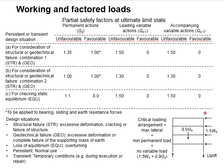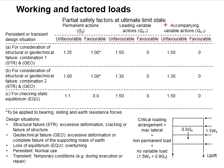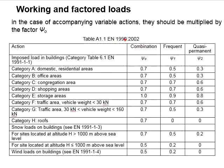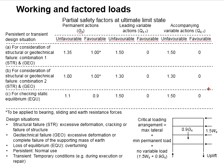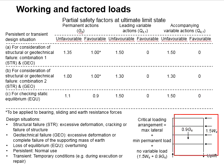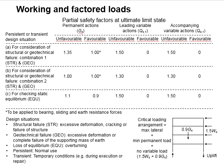Therefore, we assume the wind load as the leading variable and QK as the accompanying variable. The accompanying variable actions must be multiplied with the reduction factor, and since the accompanying variable actions in the favorable situation are multiplied by a factor of 0, the most critical arrangement becomes 1.5 × wind load + 0.9 × QK. For more detail on the factors of safety and reduction factors, you can refer to the other video uploaded in the Reinforced Concrete Design course.